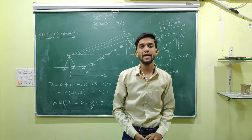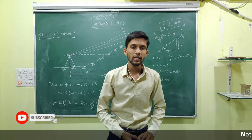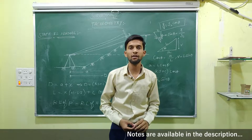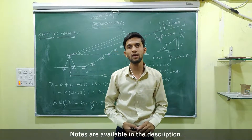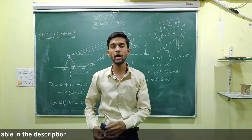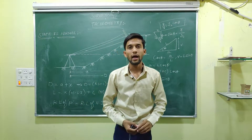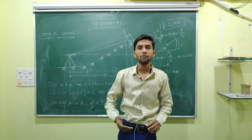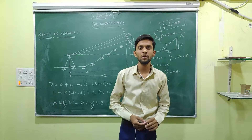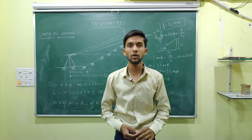Hi everyone, welcome to JLD Academy. Today we are going to learn about tachometry — specifically when the stop is normal. We are going to derive the horizontal distance formula as well as the RL of point P. We are also providing notes in the video description, which you can download.